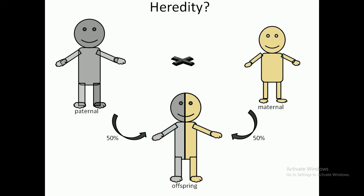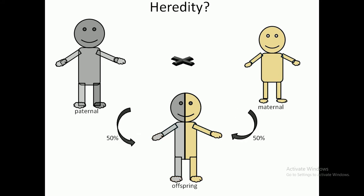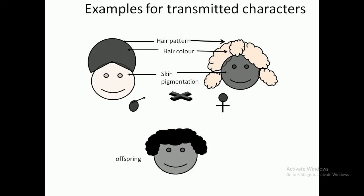The transmission of characters is 50% from both parents. That is the reason offspring are not an exact copy of their parents — they are a mix of both. We will see this with the help of an example. Here I have taken characters like hair pattern, hair color, and skin pigmentation. You can see the offspring coming from both parents are a mix of the two.